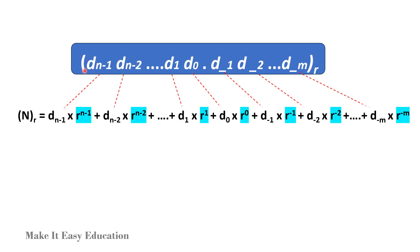The value of the number is the sum of each digit multiplied by the corresponding power of the radix.